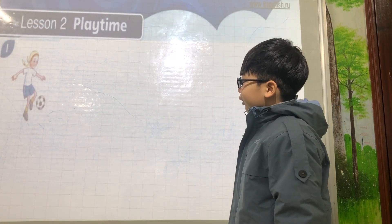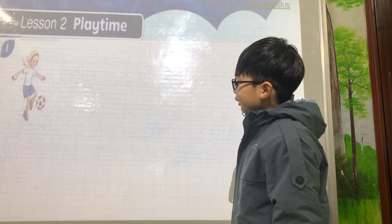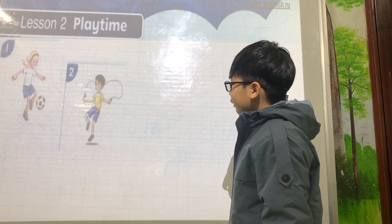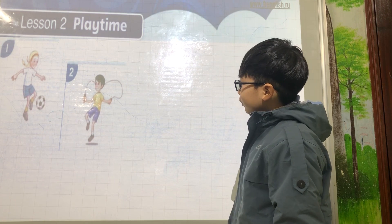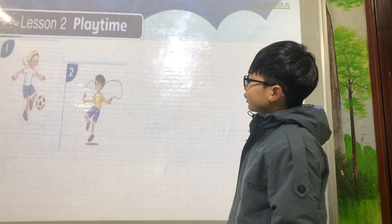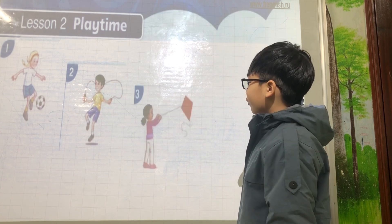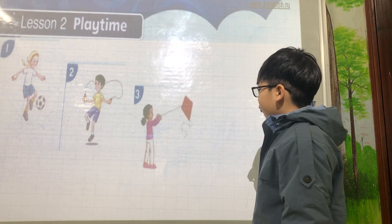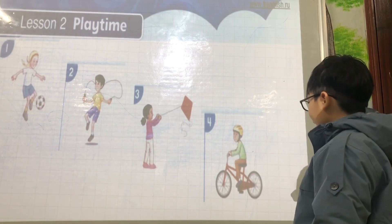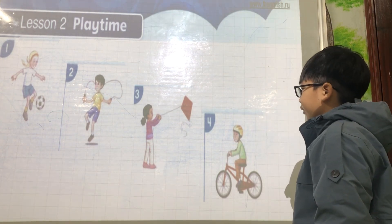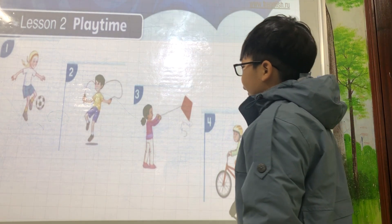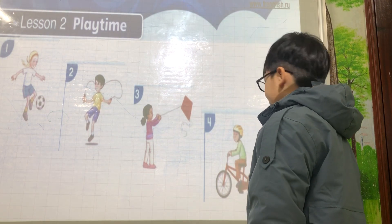Play time. Run. Soccer. Play soccer. Jump. Jump rope. Fly kite. Fly a kite. Okay, what can you do? I can fly a kite.